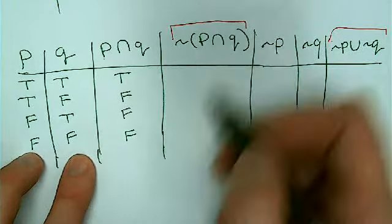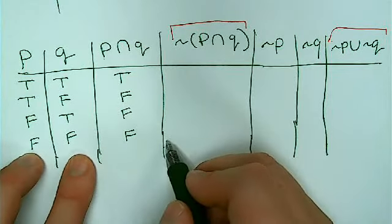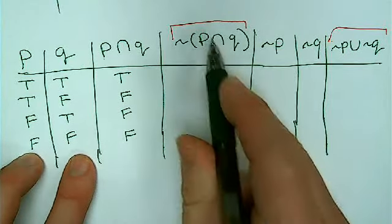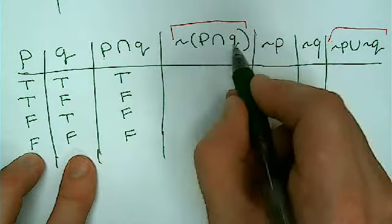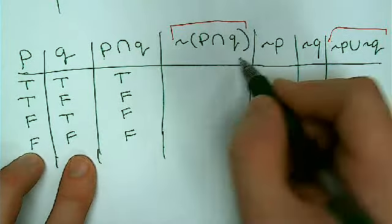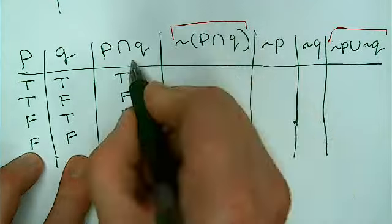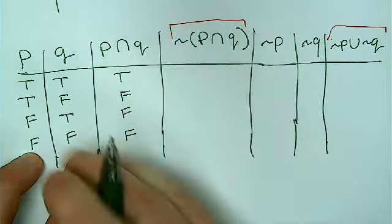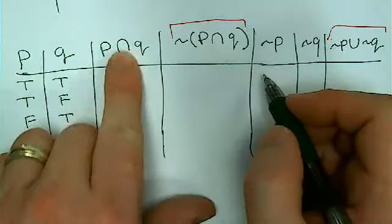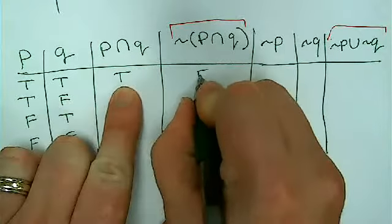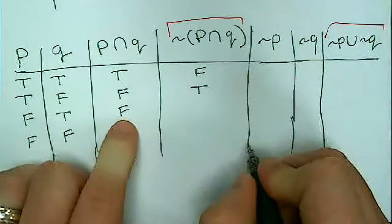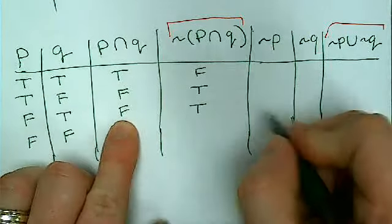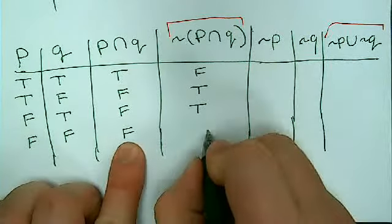And that goes back to what we were talking about before. What about this column? Not quantity P and Q. So I'm taking the P and Q, that's this column, and I'm doing the not. So I'm just reversing everybody. If I come down this column, true becomes false, false becomes true, false becomes true, false becomes true.